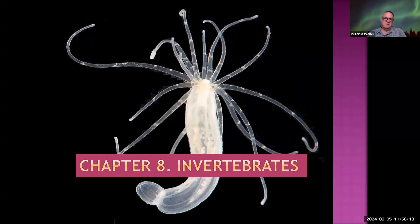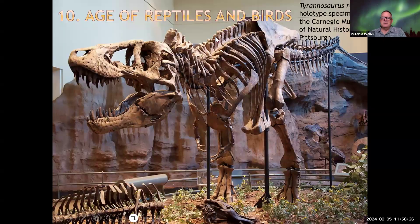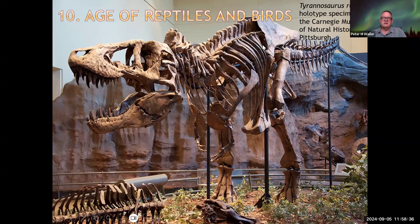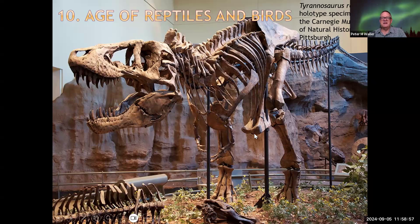Then we'll shift to animals — first invertebrates, then vertebrates, which both appeared at the beginning of the Cambrian or just before. Then we'll look at everybody's favorite: the dinosaurs — but also birds and crocodiles. There are two major categories of archosaurs: the dinosaurs, which were closer to birds, and the Phytosaurs and Crocodilomorpha — some that looked like birds and some that looked like crocodiles.